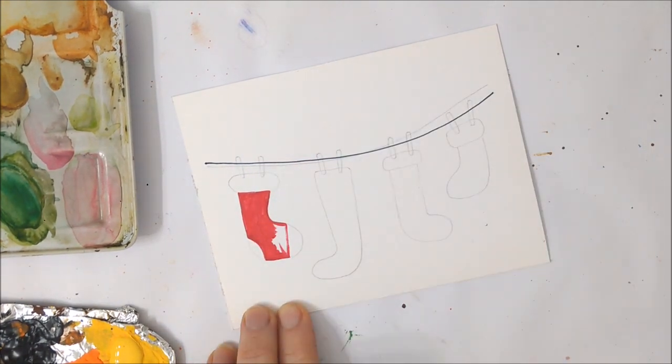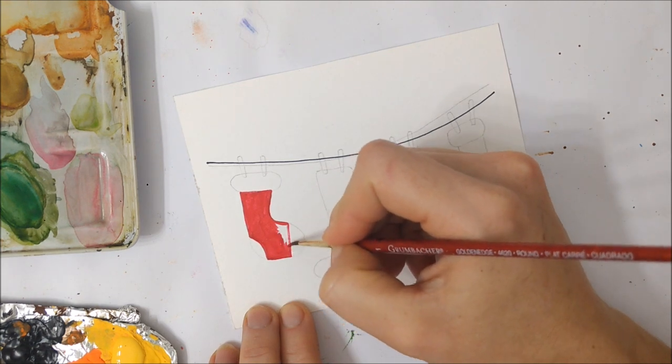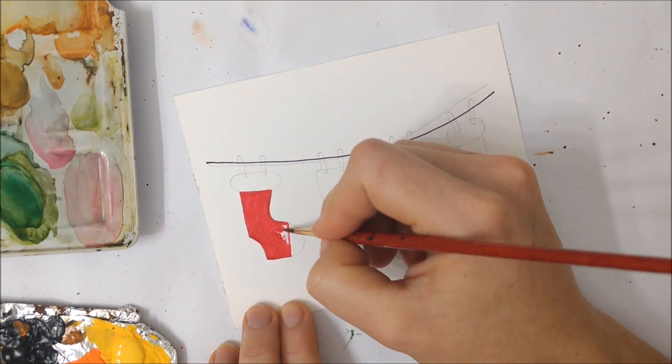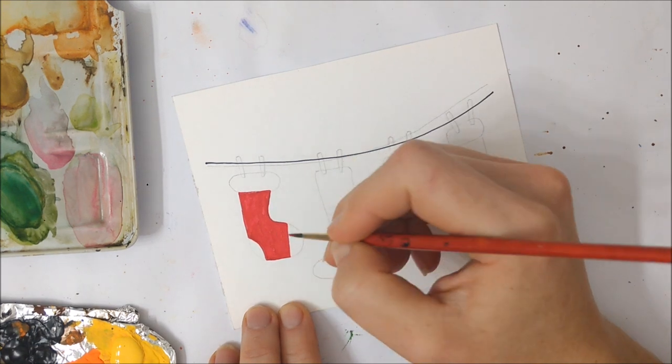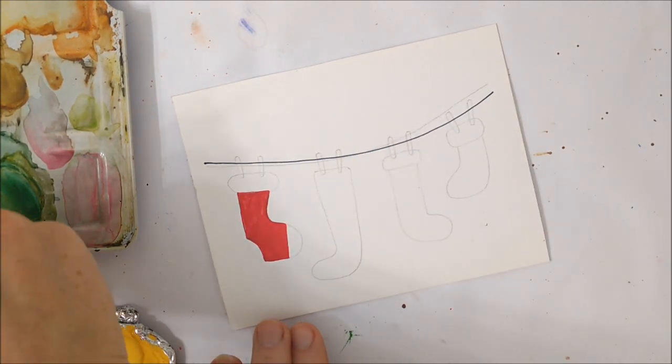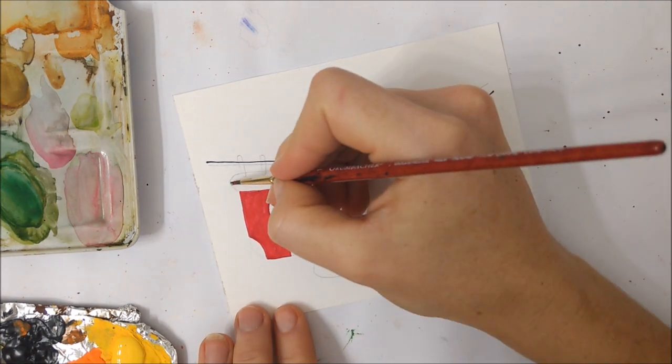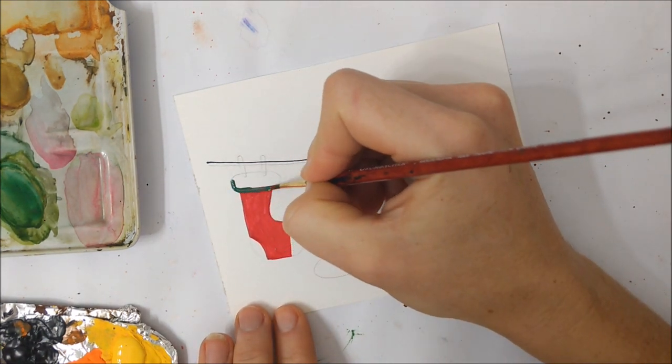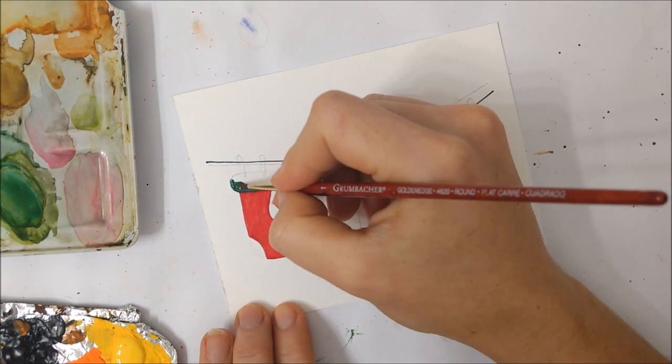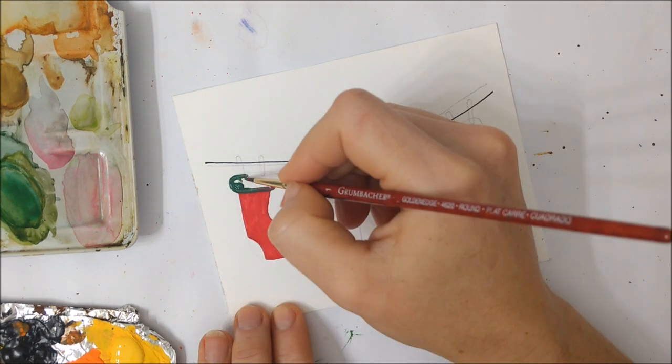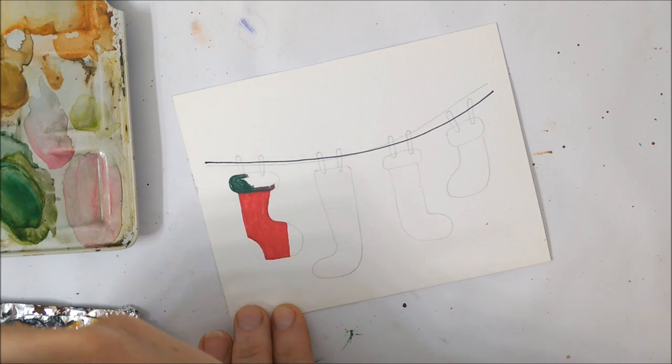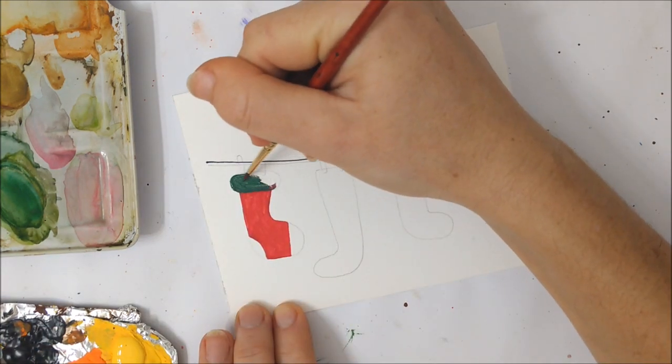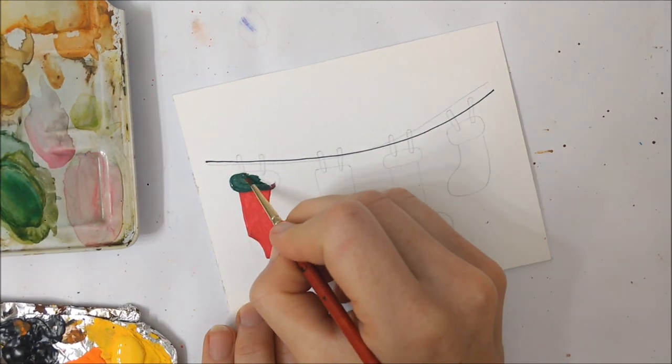Then grab a pencil and roughly sketch out your stockings. Make sure the top of each stocking is about a quarter to half a centimeter away from the black clothesline you drew earlier. This allows the clothespins to overlap with both the stocking and the clothesline.